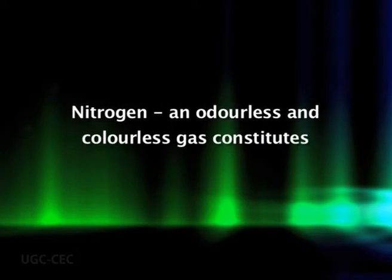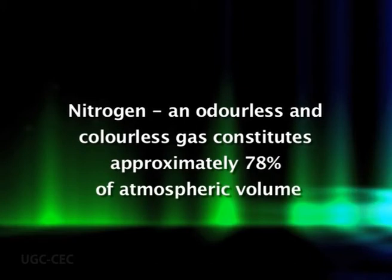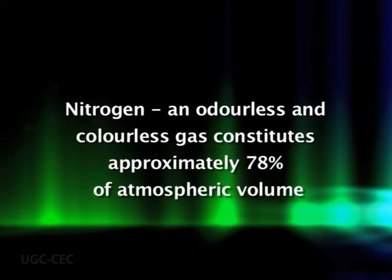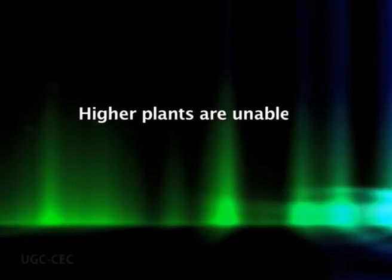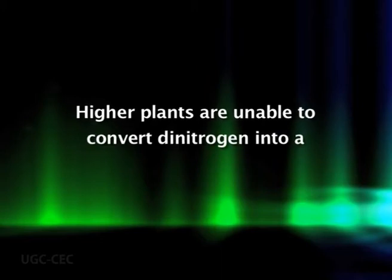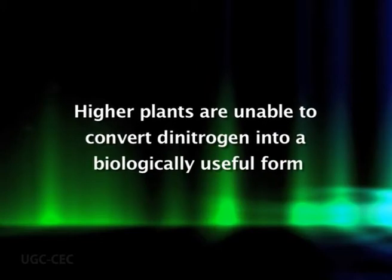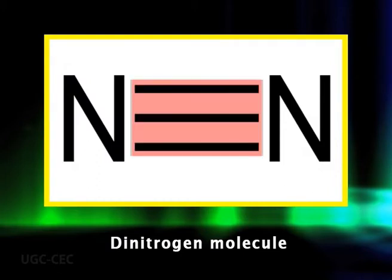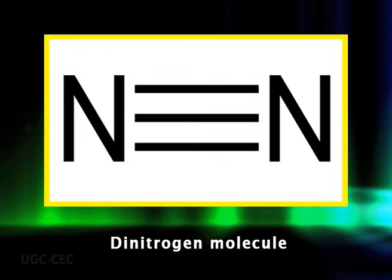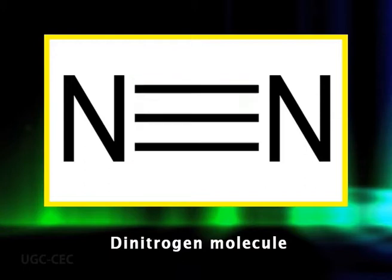The bulk of the atmosphere — that is 78% by volume — consists of molecular nitrogen, an odorless and colorless gas. In spite of its abundance, higher plants are unable to convert dinitrogen into a biologically useful form. The two nitrogen atoms in dinitrogen are joined by an exceptionally stable triple covalent bond, and plants do not have the enzyme that will reduce this bond.